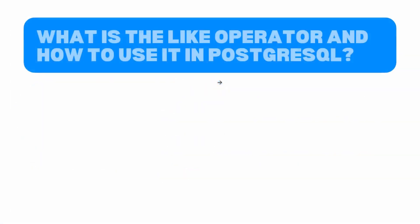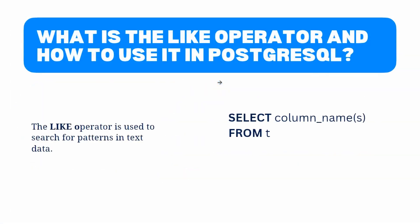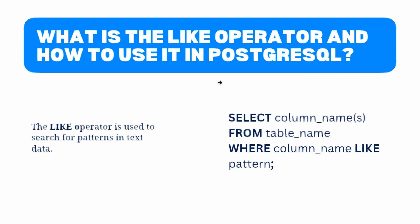Let's start by discussing what is a Like operator. The Like operator is used to search for a pattern in text data. It is a powerful tool that can be used to match a text string based on a specific criteria. The Like operator is commonly used in PostgreSQL queries to search for specific data within a database.